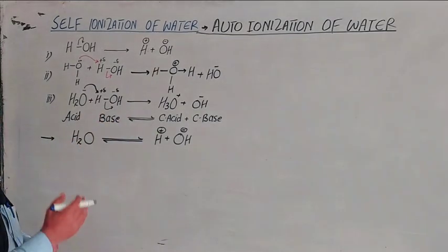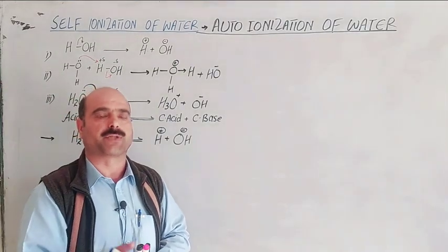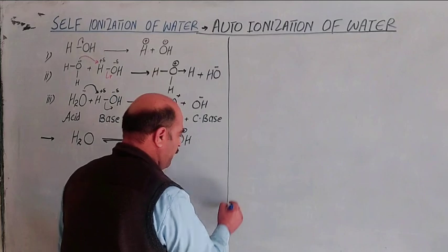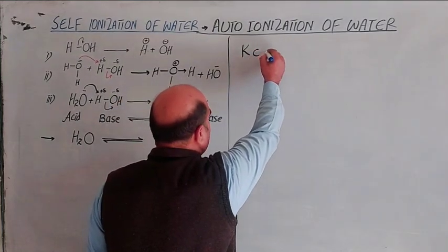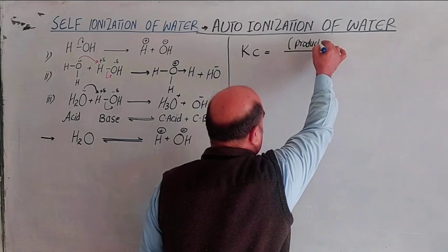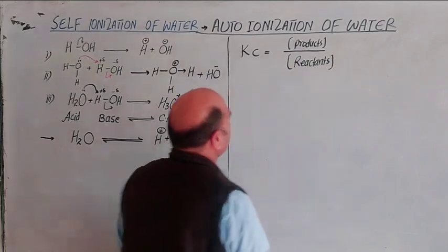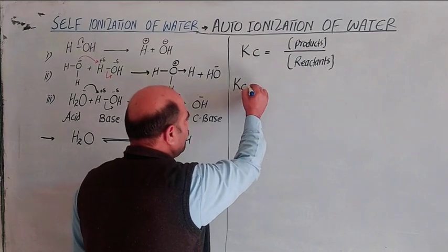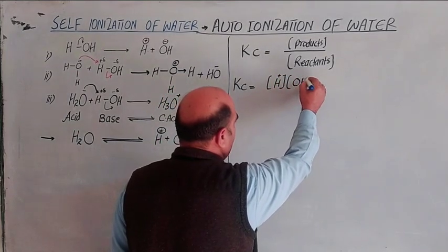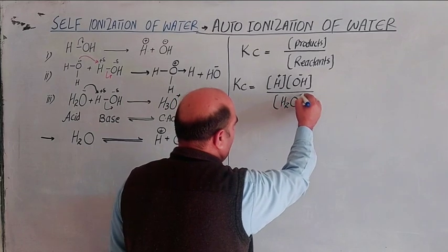The rate of the forward reaction equals the rate of the reverse reaction. This reversible process reaches an equilibrium state. At every equilibrium state there is an equilibrium constant, generally represented as Kc. Kc is the ratio of the concentration of products to the concentration of reactants. So Kc equals the concentration of hydrogen ion in solution multiplied by the concentration of hydroxide ion, divided by the concentration of undissociated water molecules.